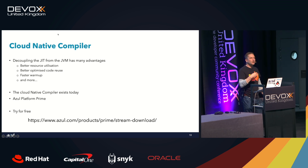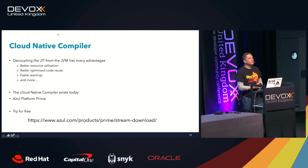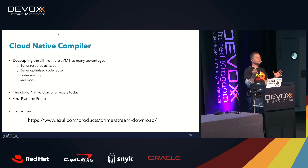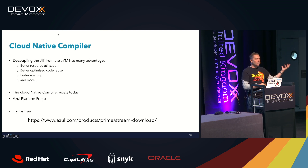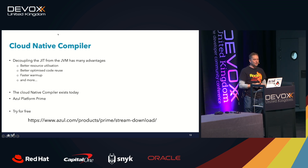This does exist today. If you want to try it out, you can go to our website — there's a download, and you can use it for development testing for free. Basically, we can provide you with a Kubernetes cluster that sets up the compile environment, and then you can configure that to run with your JVMs, have your JVMs connect to it, have that do the compilation, and see all of the benefits I've just explained.